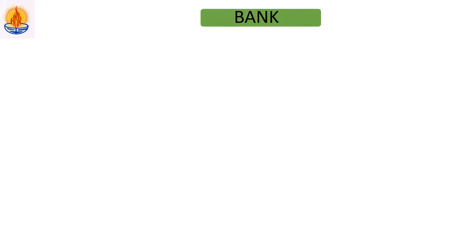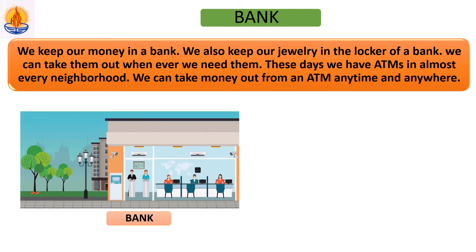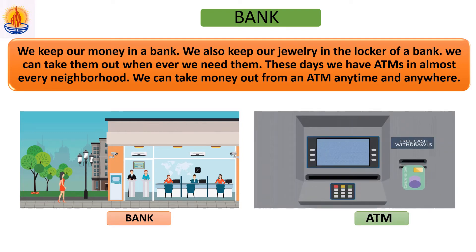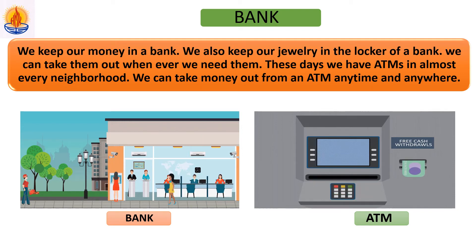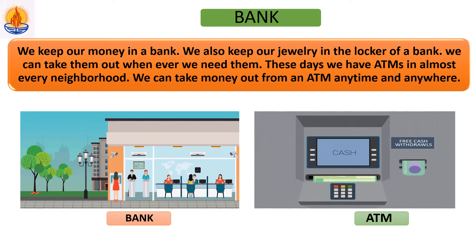What else do we have in our neighborhood? We have a bank. We all keep our money in a bank. We also keep our jewelry in the locker of a bank and can take them out whenever we need them. These days we have ATMs in almost every neighborhood — we can take money out from an ATM anywhere and at any time. That is why ATM means 'anytime money.' This is a bank. Tell mommy and daddy to take you to a bank and also show you how money comes out of an ATM machine.